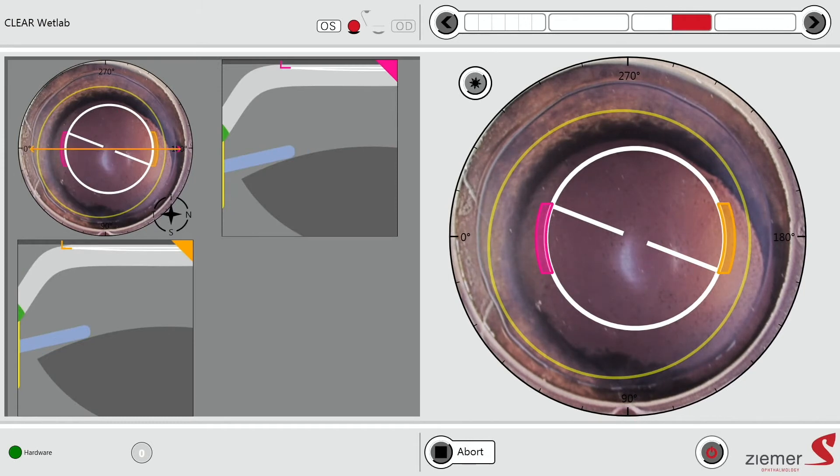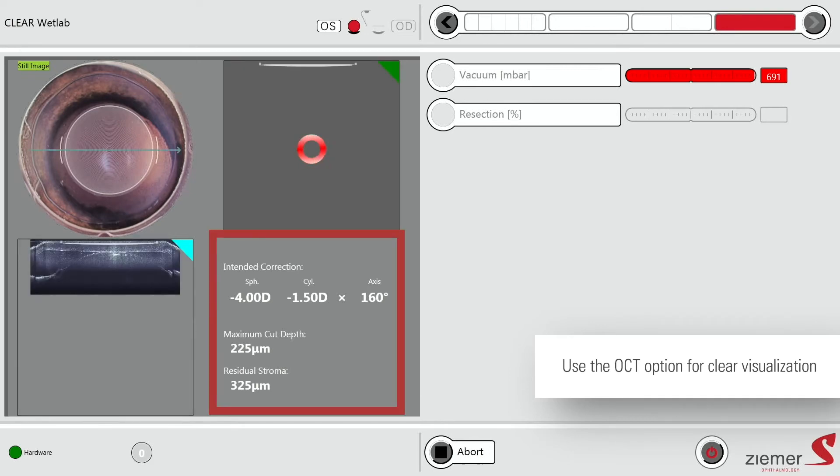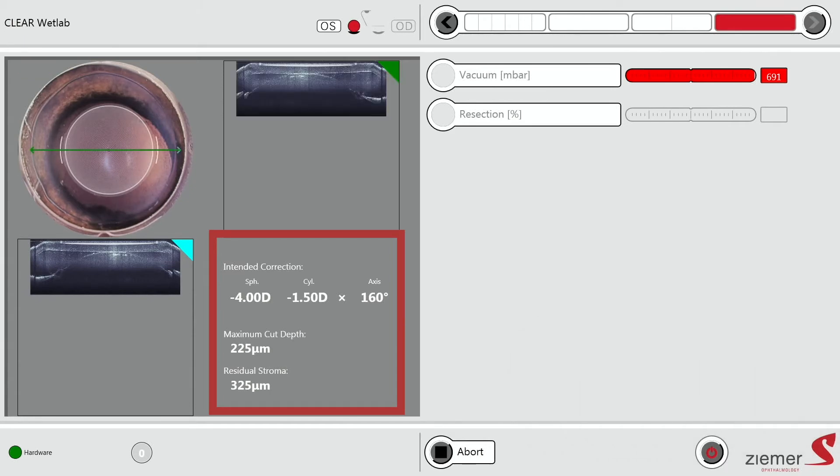You can also check the incision. There is an optional OCT that you can have. If you would like, you can make an OCT picture of your eye. And then here before starting, you have always again a summary of the correction you want to apply on this eye. And then I can proceed with the treatment.